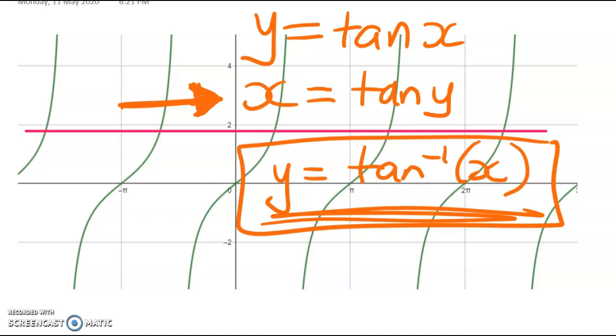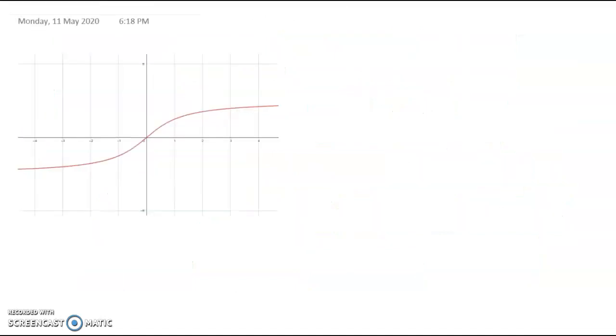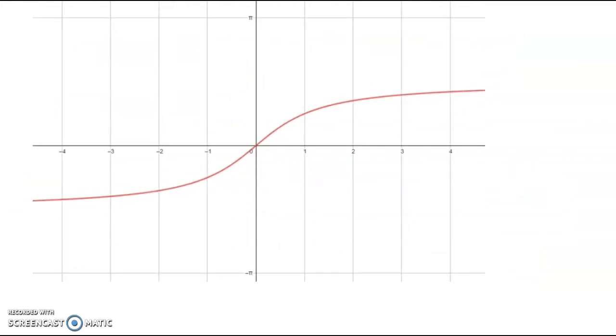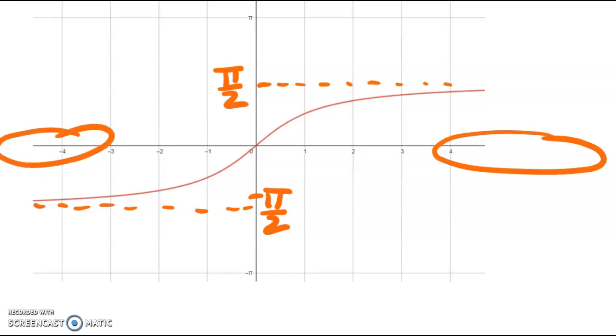So before I do that let's look at the graph for the inverse tan function. So here it is here. Okay so what's going on here? Well you can see that the highest possible value here is π/2 and the lowest possible value is negative π/2. Now how come it goes on forever? Well that's because if you look at the y values back in the tan graph they go on forever to infinity and to negative infinity.